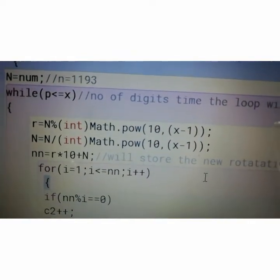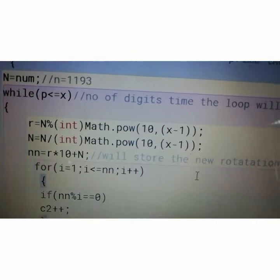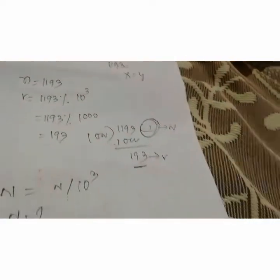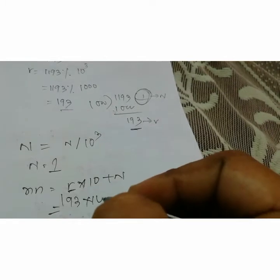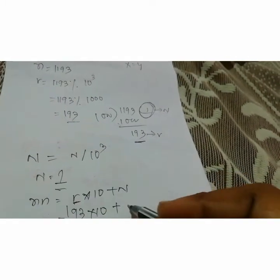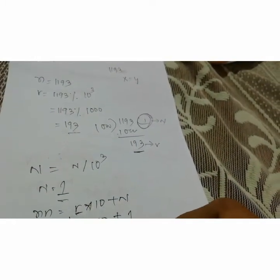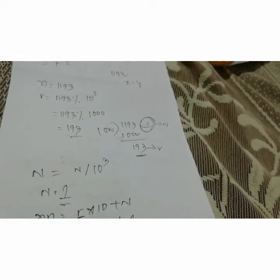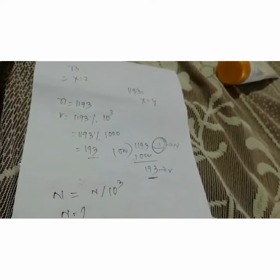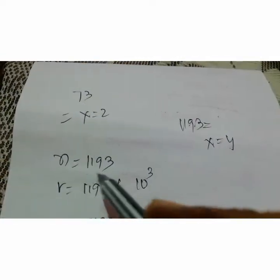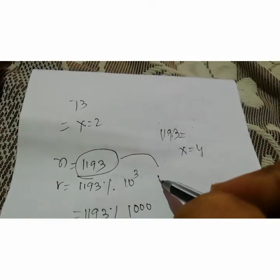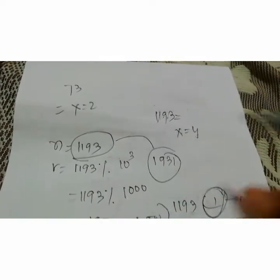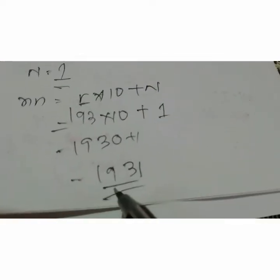Next, the new number nn equals r times 10 plus n. r is 193, so 193 times 10 plus 1 equals 1930 plus 1, which is 1931. So taking the number 1193, the first circular rotation gives 1931.